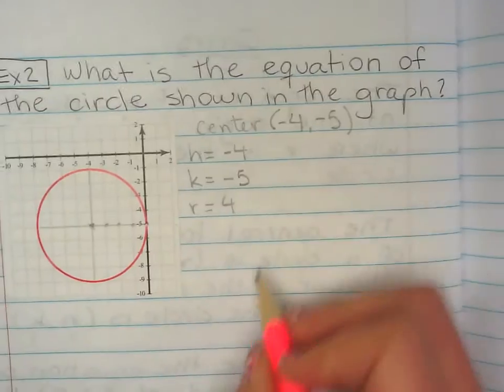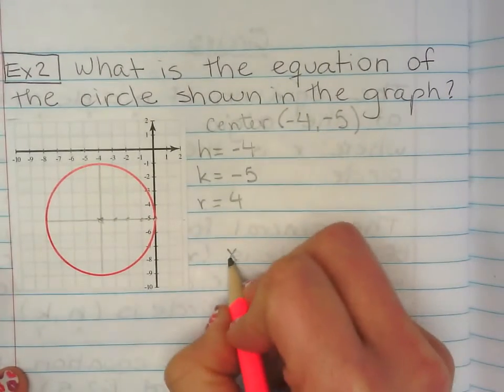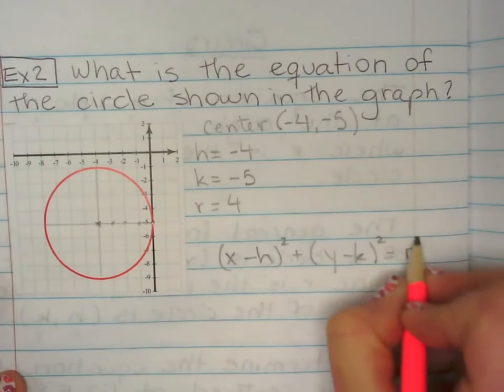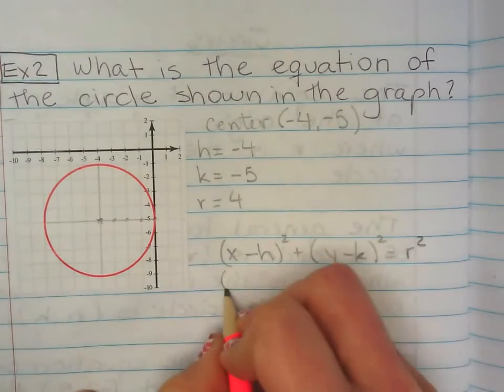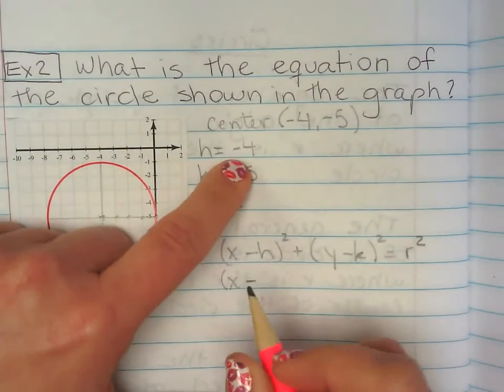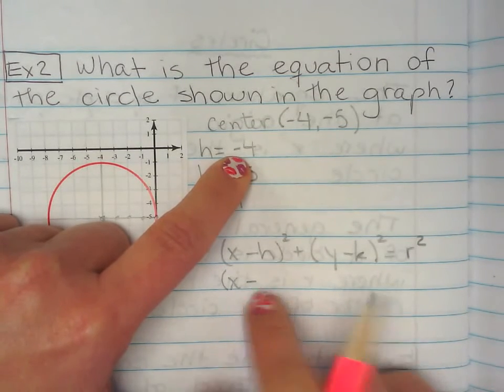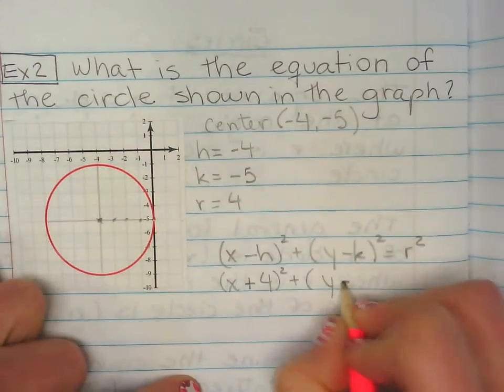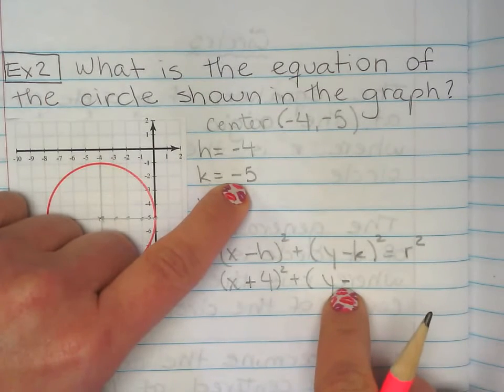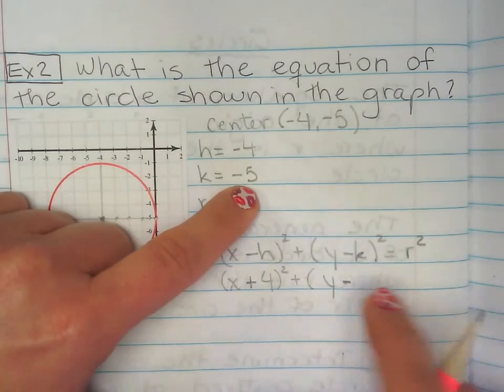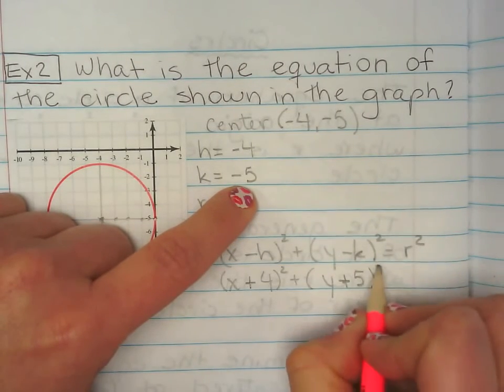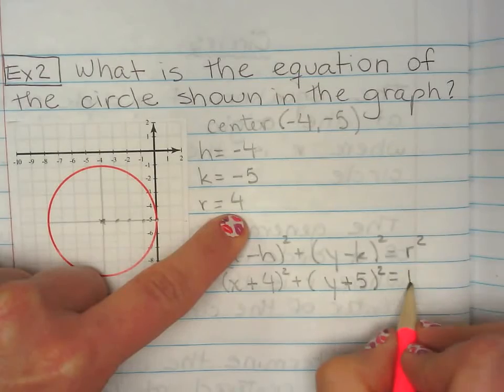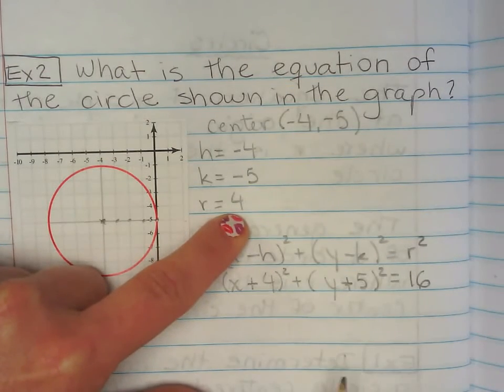Now, copy down the general formula. Now, we substitute everything. h, right here, -4. Two negatives make a positive. Be careful with this one. Two negatives make a positive. k, -5. So, minus negative 5. Two negatives make a positive. So, plus 5. Squared. Radius squared. 4 squared. 16. If you don't believe me, type that in the calculator. That's all you're doing. Piece of cake.